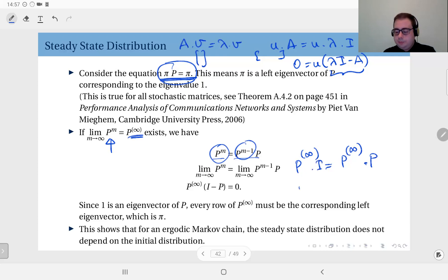And if you write an identity here and combine the terms, you will have P∞(I - P) = 0 matrix, right? When you can write this, you see this is a matrix.